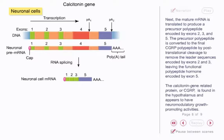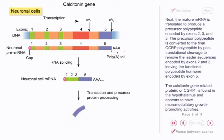Next, the mature mRNA is translated to produce a precursor polypeptide encoded by exons 2, 3, and 5. The precursor polypeptide is converted to the final CGRP polypeptide by post-translational cleavage to remove the leader sequences encoded by exons 2 and 3, leaving the functional polypeptide hormone encoded by exon 5. The calcitonin gene-related protein, or CGRP, is found in the hypothalamus and appears to have neuromodulatory growth-promoting activities.